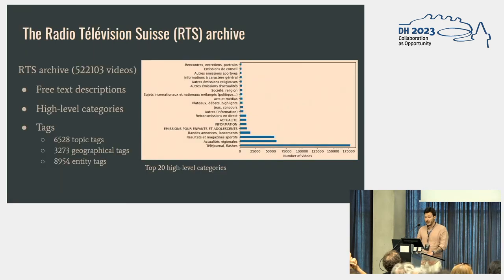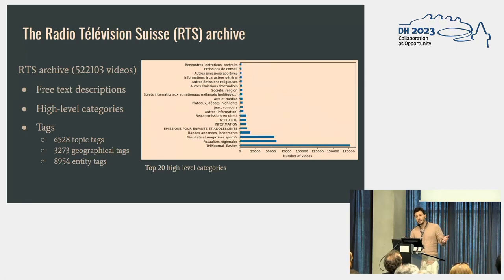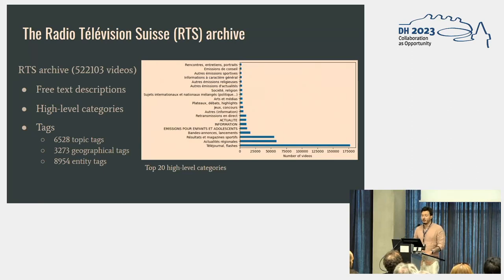Specifically for the RTS, we are dealing with more than 500,000 videos. For the metadata itself, of course there is lots of technical metadata — it's a broadcasting company — but we're not really using that. We do have free text descriptions, high-level categories, and as you can see on the graph, it's in French but it's mostly about news, as you might expect. And then a variety of tags: mostly tags about subjects of the videos, topic tags, geographical tags about locations, cities, countries, as well as entity tags — named people, organizations, sports teams, those kinds of elements.